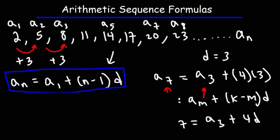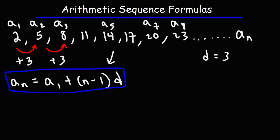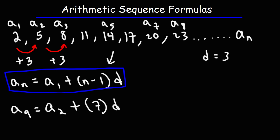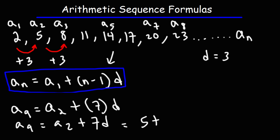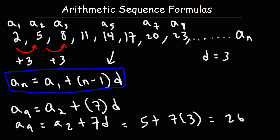For example, to find the ninth term from the second term when we don't know the first term: a sub 9 equals a sub 2 plus (9 minus 2) times d, which is 7 times the common difference. The second term is 5, and 7 times 3 is 21, so 5 plus 21 is 26. So the ninth term is 26.